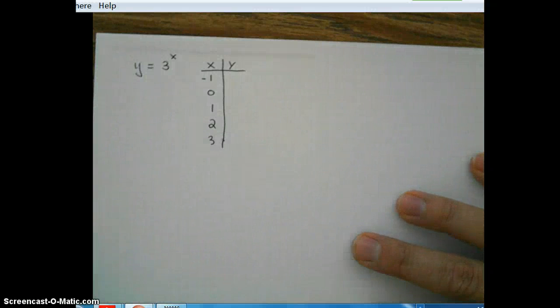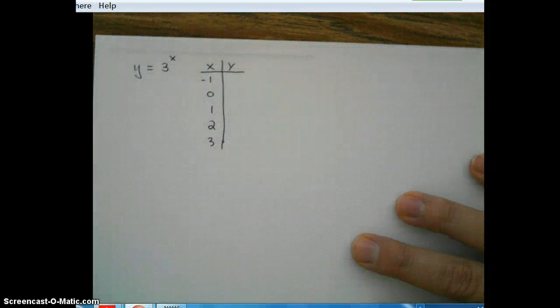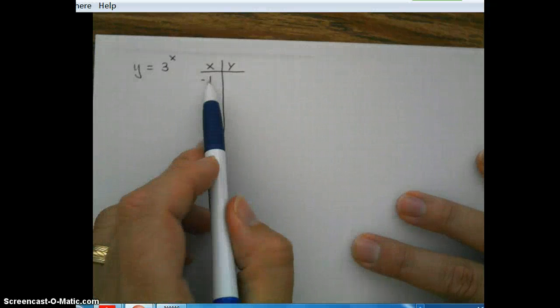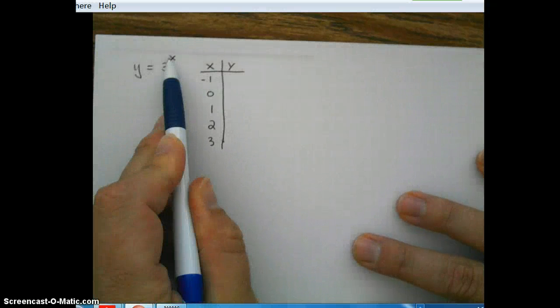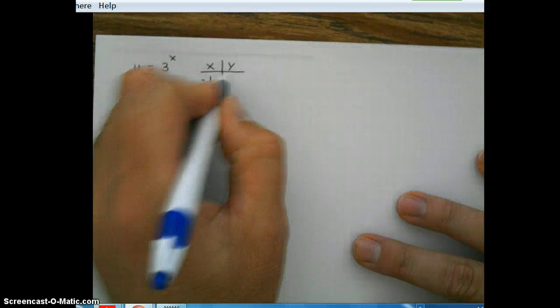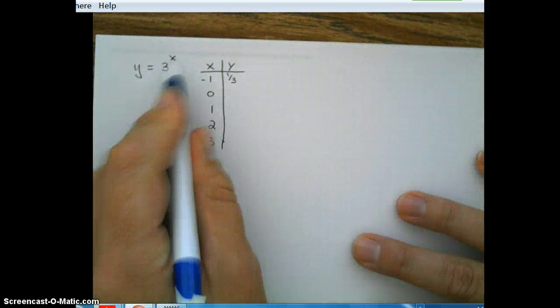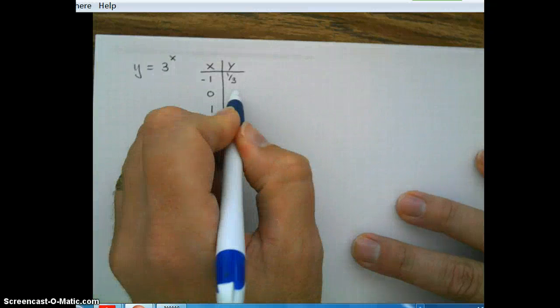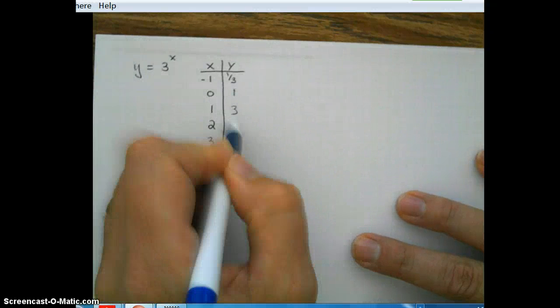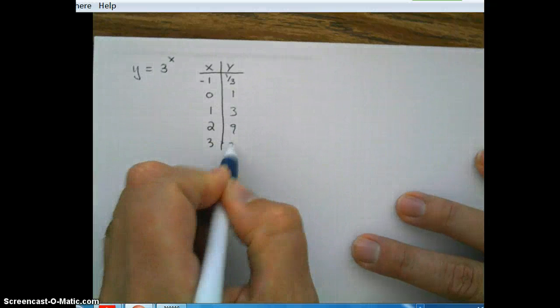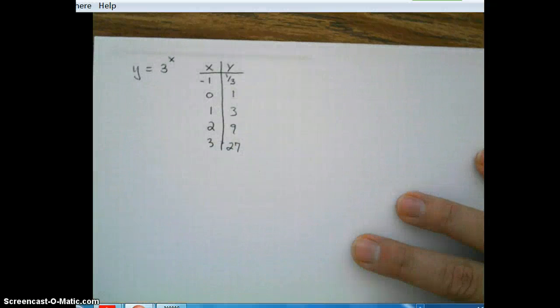Now we're just going to plug these numbers in. We're going to try to do this all without using a calculator. So starting off with negative 1, we have 3 to the negative 1, which gives us 1 third. 3 to the 0, 3 to the 1st, 3 to the 2nd, 3 to the 3rd.